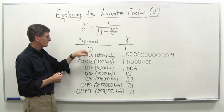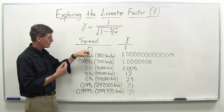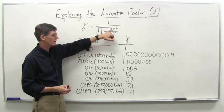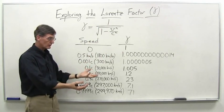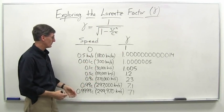At speed 0, we've done this before. When v is 0, this is just 1. 1 divided by 1, gamma is 1. So no effect if the two clocks are actually right next to each other.